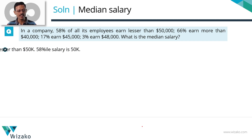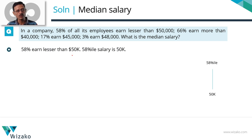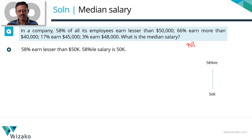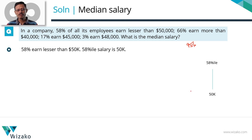58% of its employees are earning less than $50,000, which means that the 58th percentile salary is $50,000. When I say I've scored a 95th percentile in the GMAT, that means 95% of the people who have taken the GMAT have a score that is lesser than mine. So if 58% of the employees earn less than $50,000, $50,000 salary is going to be the 58th percentile salary.